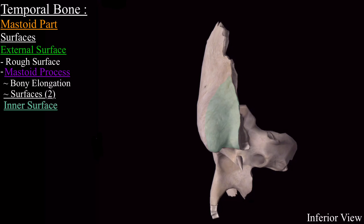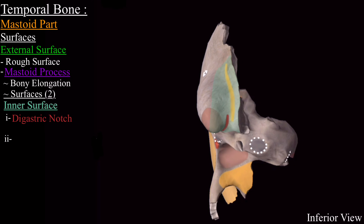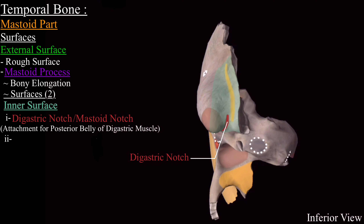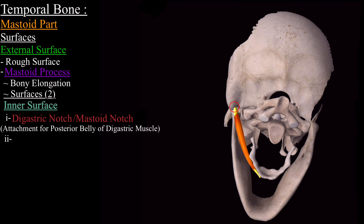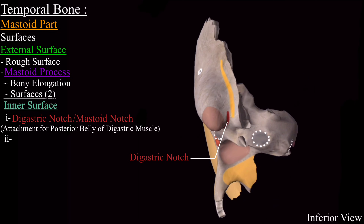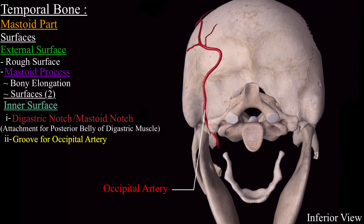On the inner surface of the mastoid process are two important structures. The first is the digastric notch, also called the mastoid notch, which provides attachment to the posterior belly of the digastric muscle. Medial to the digastric notch is present a groove that lodges the occipital artery.